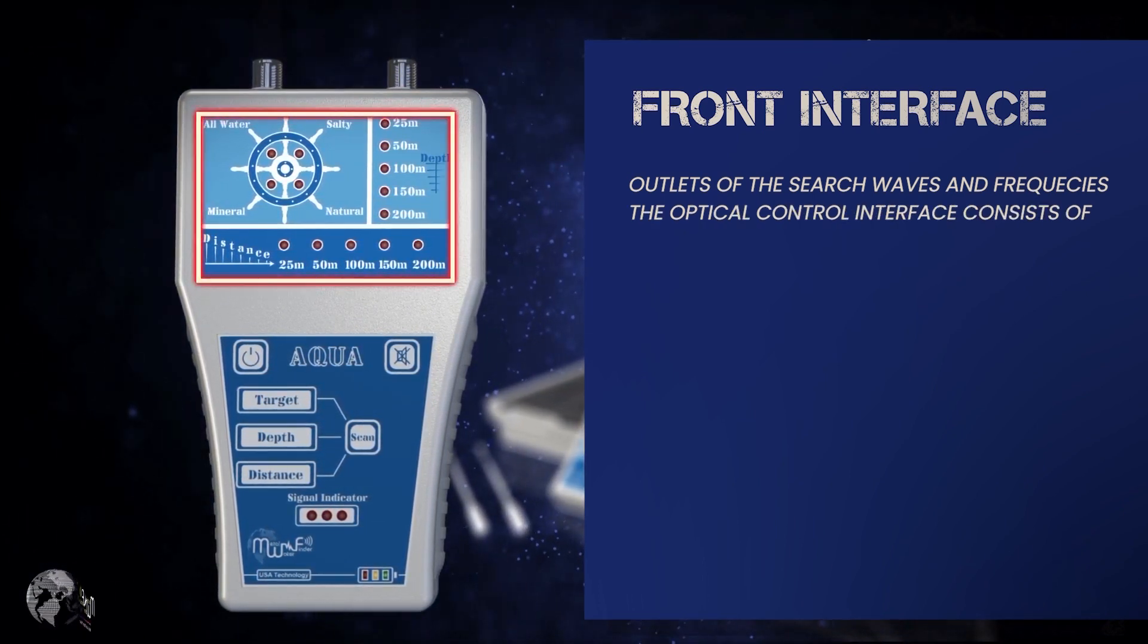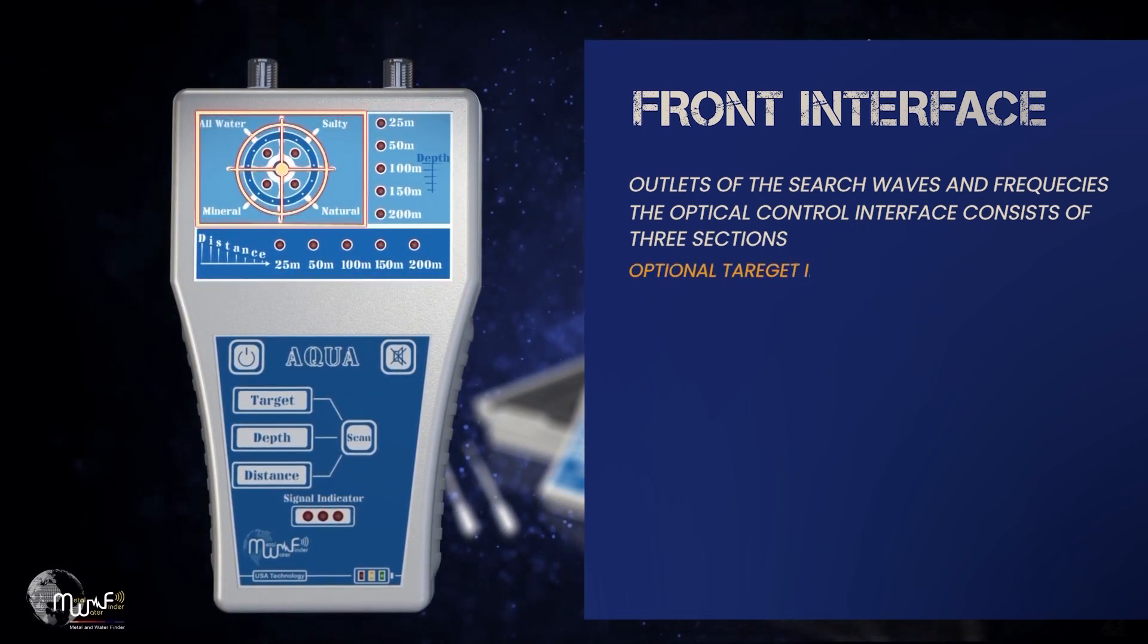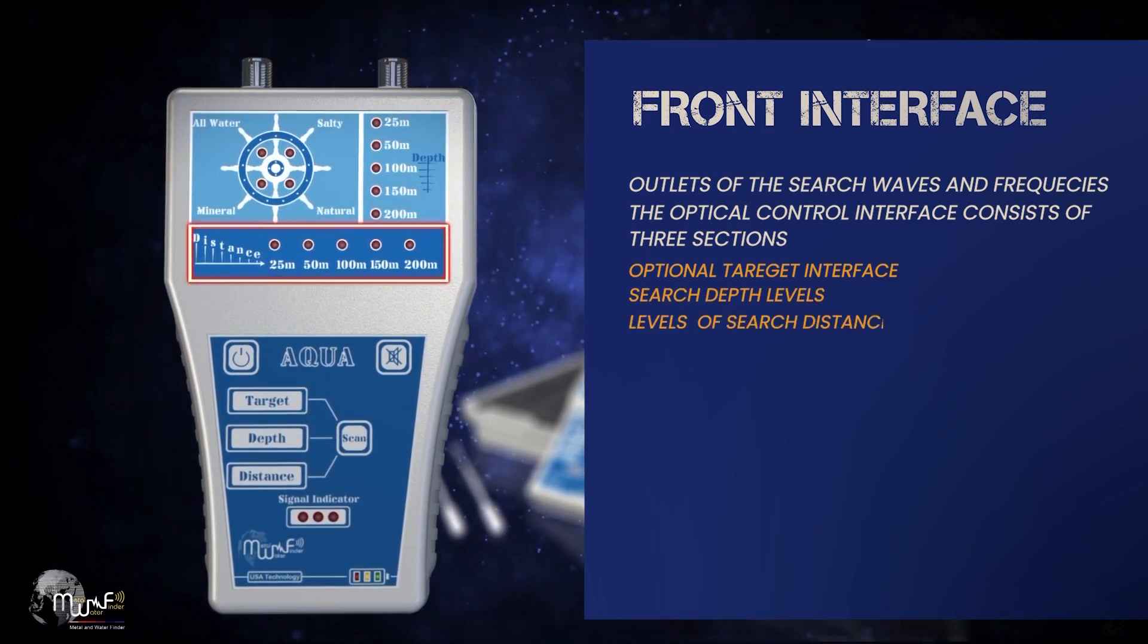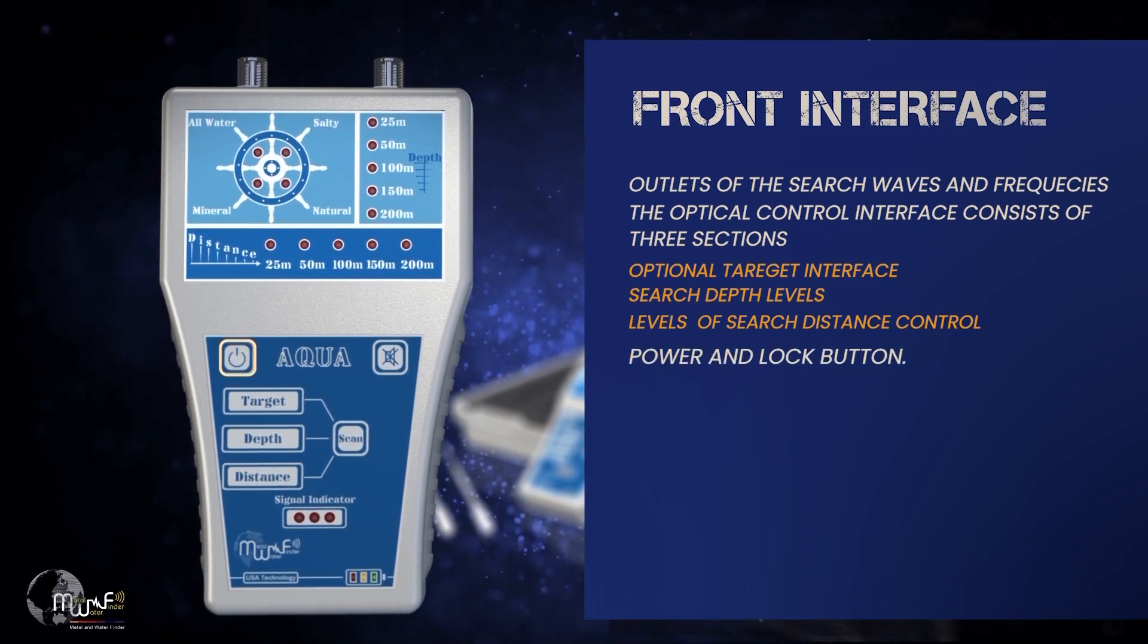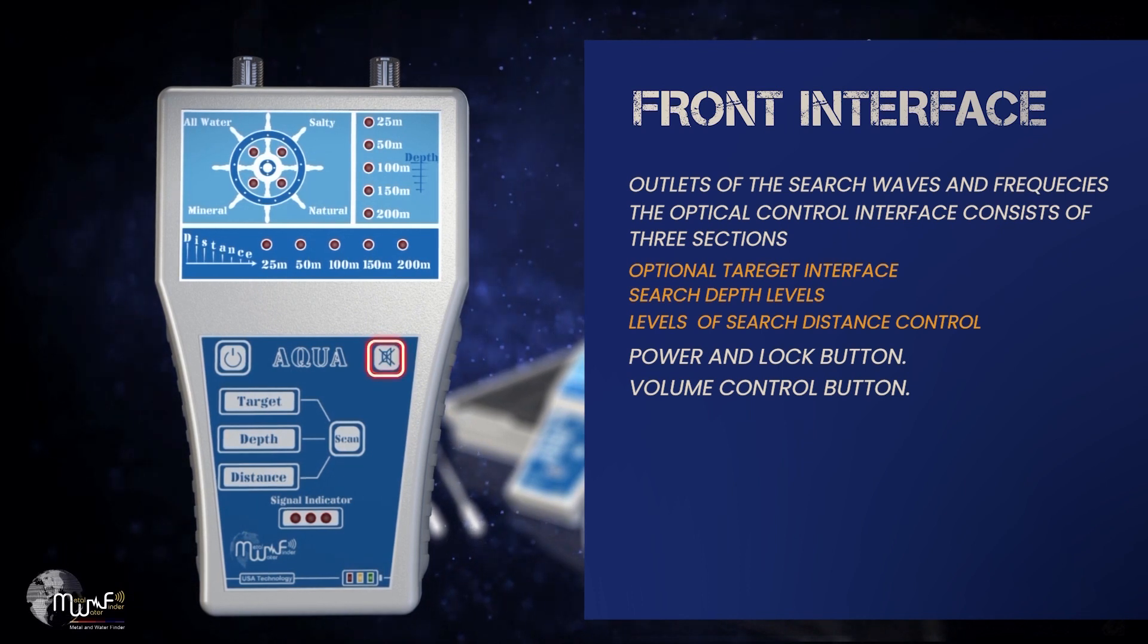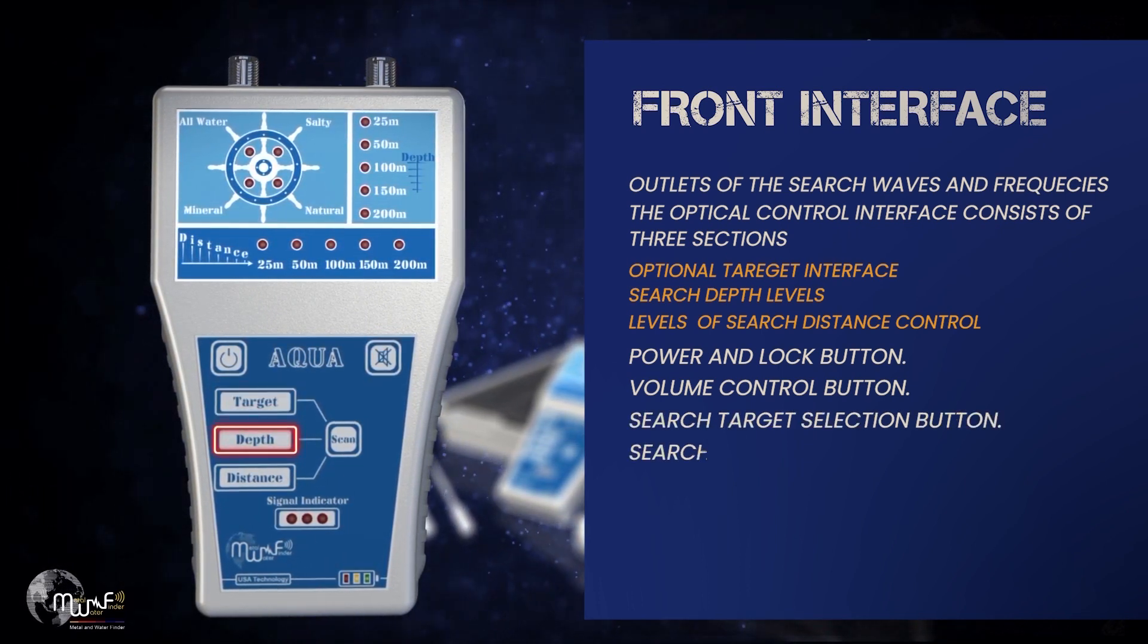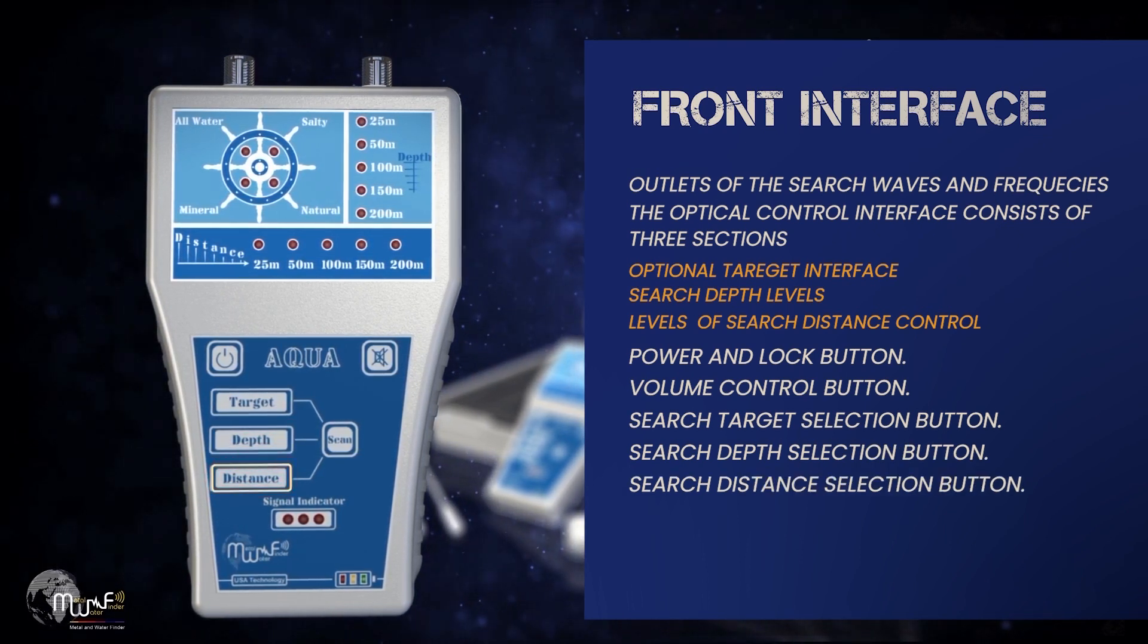The optical control interface consists of three sections: Optional target interface, search depth levels, and levels of search distance control. Controls include: power unlock switch, volume control key, search target selection key, search depth selection key, and search distance selection key.